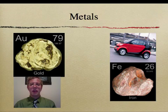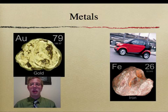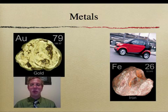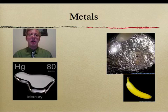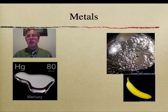Examples of metals include gold, pictured here on the slide, along with iron, which has the symbol Fe. I have a smart car up there, which also contains small amounts of iron in its construction. Additional metals include mercury, which is the only metal that's not a solid at room temperature, and potassium, which is found in bananas that you need every day.